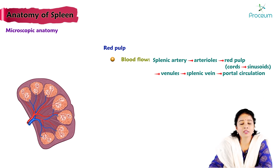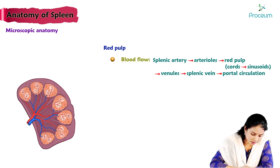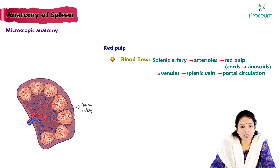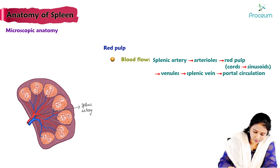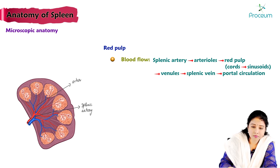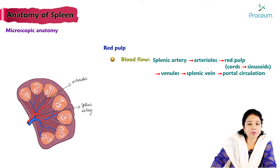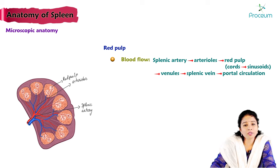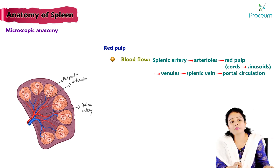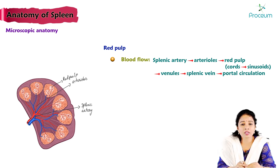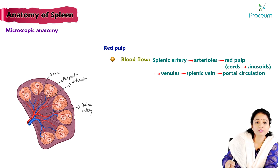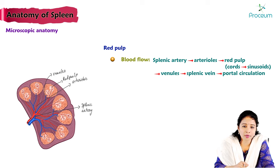Blood flow inside the spleen: the splenic artery divides to form arterioles, which end in the red pulp. From the red pulp, blood flows into the cords and sinusoids; from the sinusoids it connects to venules, and from the venules blood is drained via the splenic vein into the portal circulation.